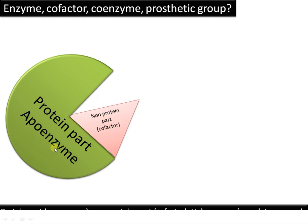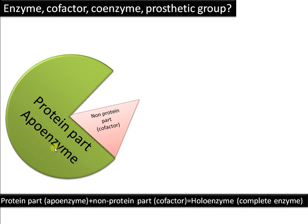The non-protein part bound to the protein part forms the holoenzyme, or the complete enzyme. This non-protein part is often essential for the activity of the enzyme. These cofactors can be divided into two types based on their chemical nature.